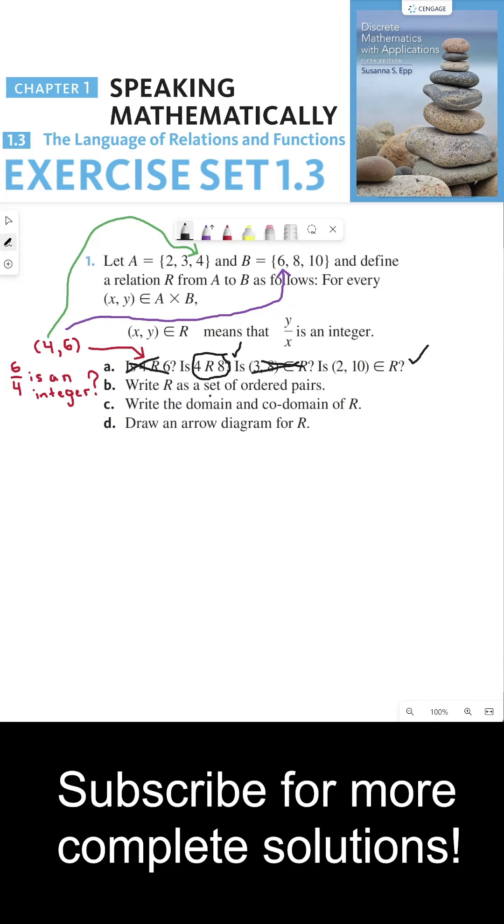So for part B it says write R as a set of ordered pairs. It contains the set of all ordered pairs such that the second coordinate divided by the first coordinate is an integer. So if my first element is 2 from A, then my second element has to be divisible by 2. And all three elements in B are divisible by 2. So I'll put 2, 6. I can do 2, 8. And I can do 2, 10.